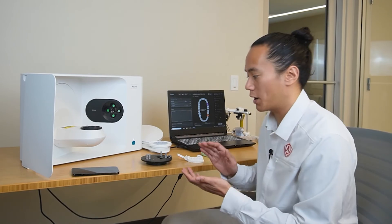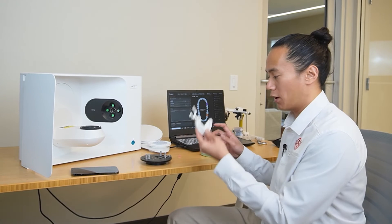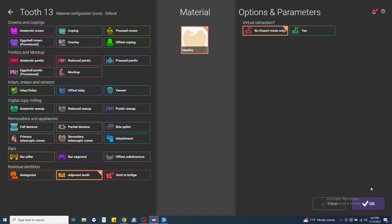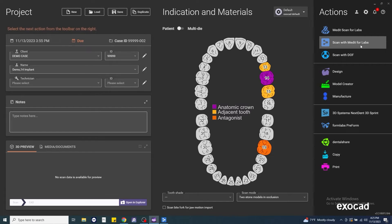The software will automatically mark an antagonist set up for us. We do have our opposing scan, so we're going to leave that as is. And then we'll make sure to mark our adjacent teeth as well. From there, we'll click save. And then scan with Medit for labs.